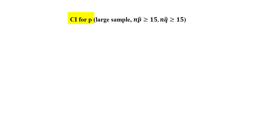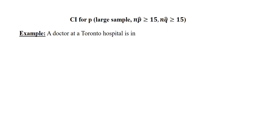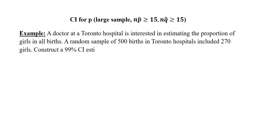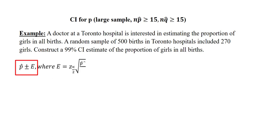Next, we construct the confidence interval for P, the population proportion. The sample size must be large — that means my n times P̂ must be greater than or equal to 15, and also my n times Q̂ must be greater than or equal to 15. Now we look at the example. A doctor at a Toronto hospital is interested in estimating the proportion of girls in all births. A random sample of 500 births in Toronto hospitals included 270 girls. Construct a 99% confidence interval estimate of the proportion of girls in all births. We use the formula P̂ plus or minus E.